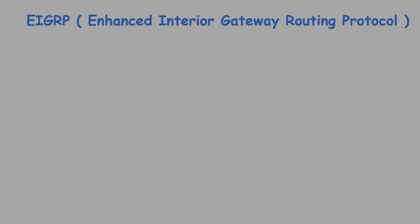EIGRP stands for Enhanced Interior Gateway Routing Protocol. It is an Advanced Distance Vector Routing Protocol, sometimes referred to as a Hybrid Routing Protocol because it has characteristics of both Distance Vector and Link State Routing Protocols. EIGRP replaced IGRP, an older proprietary Cisco routing protocol. EIGRP was also proprietary but Cisco decided in 2013 to convert it into an open standard.